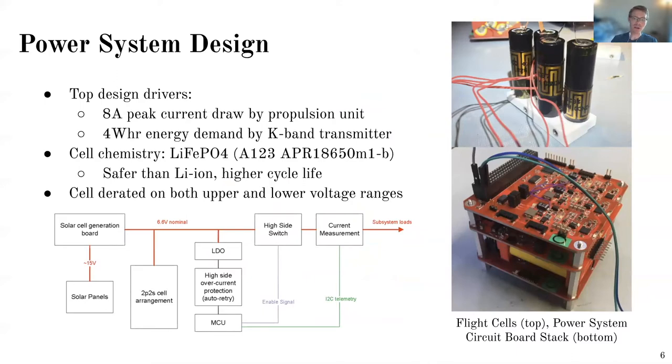So the power system, the top level drivers for the design were a peak power requirement and then an energy requirement. So the peak power requirement here came from the propulsion system. So the propulsion system uses a flyback topology to generate 1,000 volts. So it's a sawtooth waveform with an 8-amp peak current. So to support that from such a small system, a lot of design consideration had to go in there to make sure we could handle that amount of current.